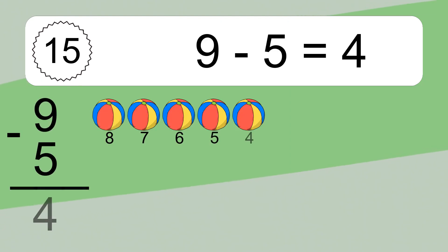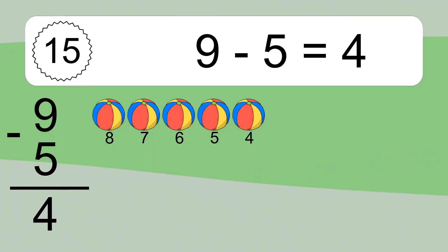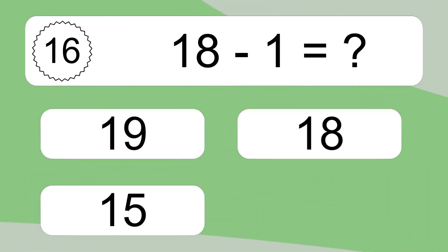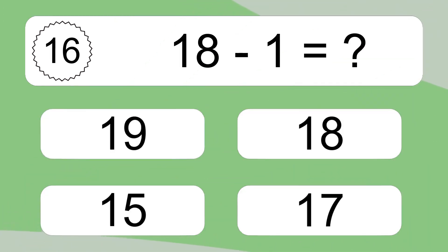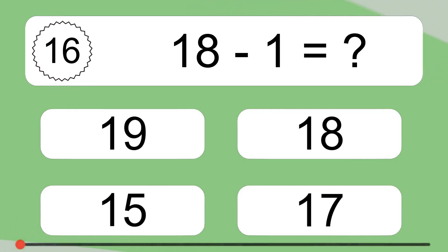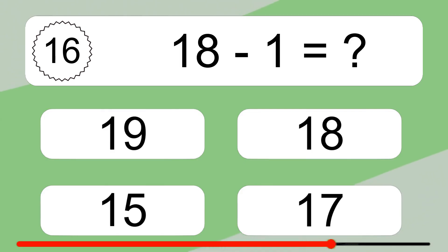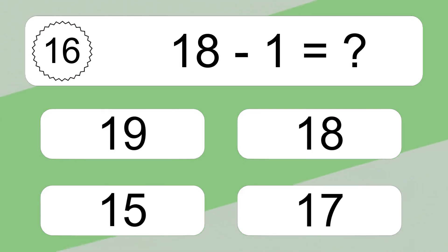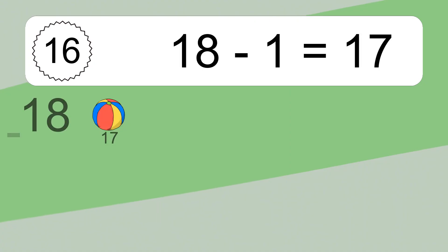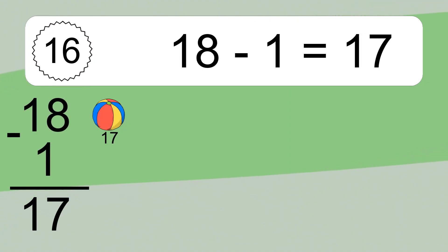9 minus 5 equals what? 9 minus 5 equals 4. Let's count it. 8, 7, 6, 5, 4. 18 minus 1 equals what? 18 minus 1 equals 17. Let's count it. 17.